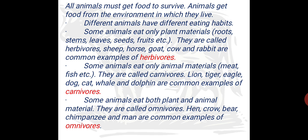Some animals eat only plants. These animals are called herbivores. Sheep, horse, goat, cow and rabbit are common examples of herbivores. They actually eat only plants.